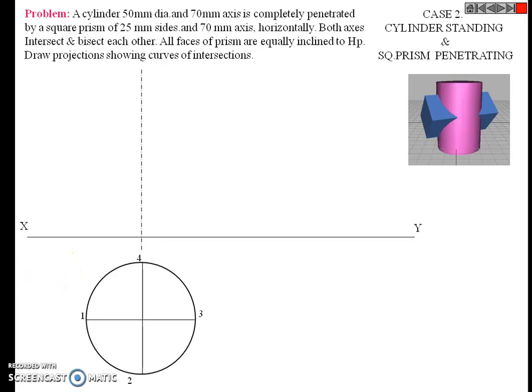Take the projection of this top view for the front view, and give numbering: 1 dash, 2 dash, 4 dash, 3 dash.